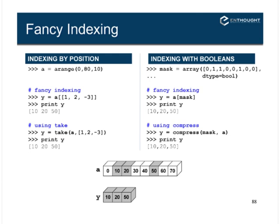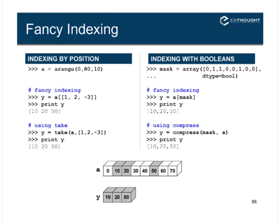If the list or array you pass in for indexing has type integer, that's standard fancy indexing. There's a special case: if you specify a Boolean array, it's treated differently — as a mask. Boolean arrays must be the same length as your original array. Indexing with a mask selects the elements where the mask value is 1. So a mask-based index pulls out individual elements just like integer fancy indexing.